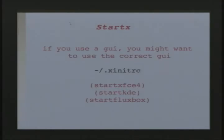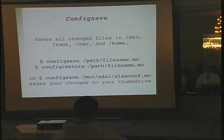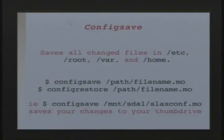If you have X running (your GUI), startx goes to the ~/.xinitrc file. If you want to change it to start XFCE, you type 'startxfce4' in that file, and when you type startx, it launches that. The tilde slash means your home directory — so as root user it's /root/.xinitrc. Config save saves all your changed files in those directories. You're running Slax, you change some stuff around to play with it, you run config save and tell it a module name, and it will save all those changes in a module. Put that in your modules folder and when you boot it back up it's got all those changes. You can also save to a thumb drive or FTP it up.